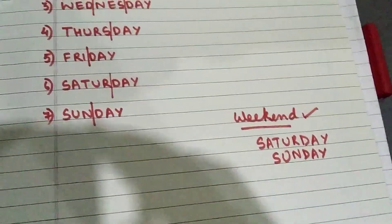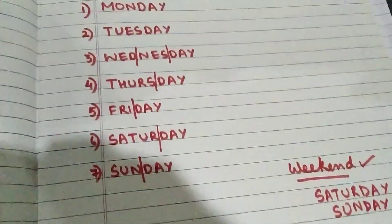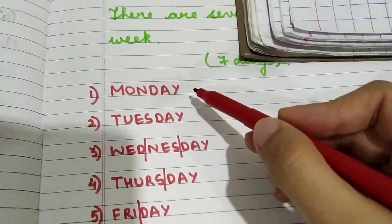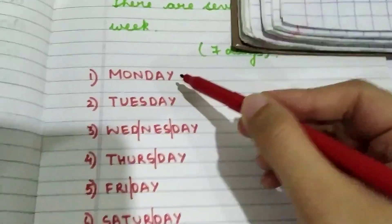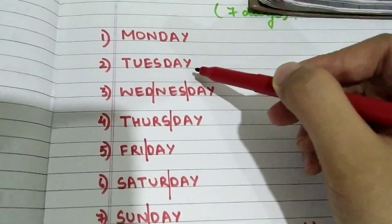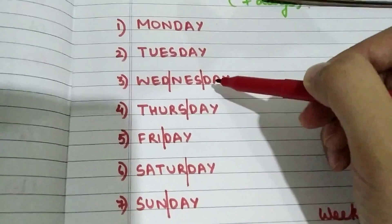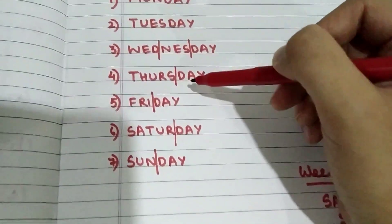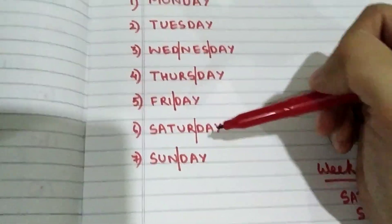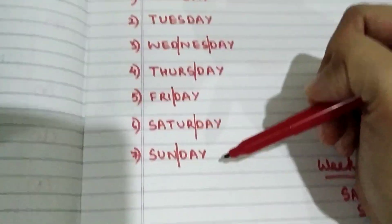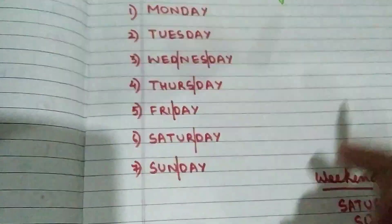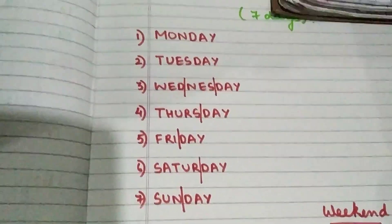So now children, you all need to know that the first day is Monday, after Monday comes Tuesday, after Tuesday comes Wednesday, after Wednesday comes Thursday and Friday, then Saturday, then Sunday. These things you need to remember.